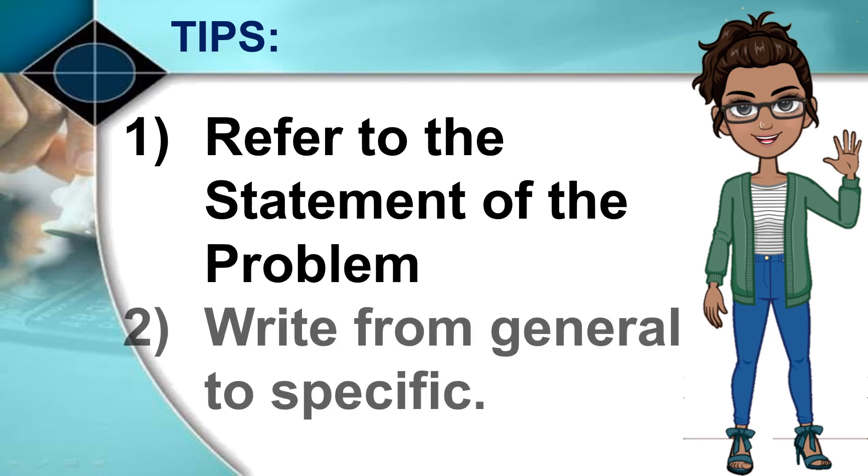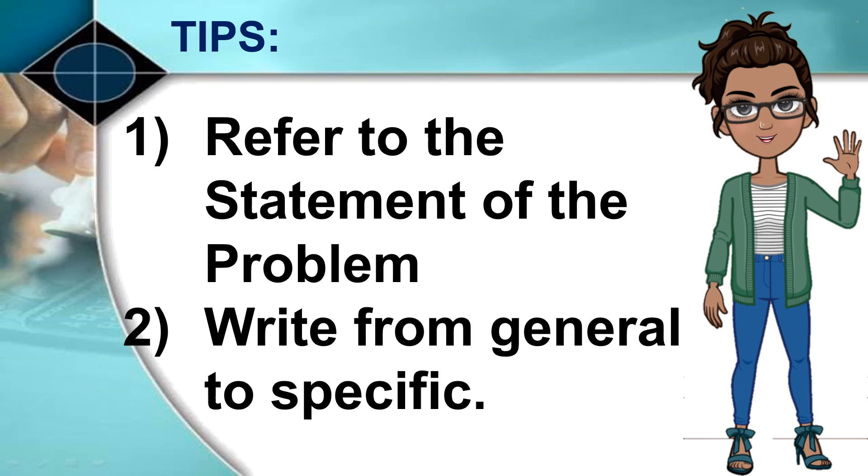Number two, write from general to specific. Write the significance of the study by looking into the general contribution of your study, such as its importance to society as a whole, then to individuals which may include yourself as a researcher.